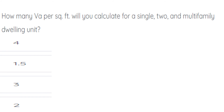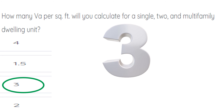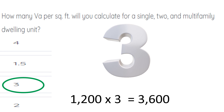How many VAs per square foot will you calculate for a single, two, or multifamily dwelling unit? The correct answer is 3 VAs per square foot — commit that to memory. It's 3 VAs per square foot for dwelling unit general lighting load calculations, covering all lighting and general receptacles, but not dedicated circuits. We also add 4,500 VAs for our small appliance and laundry circuits. For example, a 1,200 square foot home: multiply by 3 VAs to get 3,600 VAs, then add 4,500 for two small appliance and laundry circuits, then apply demand factors.